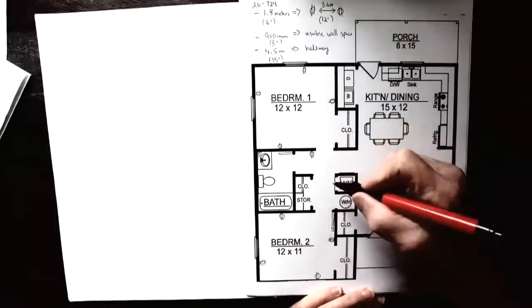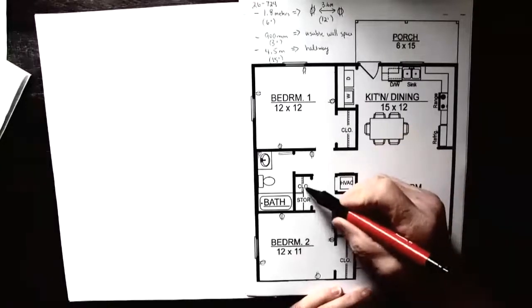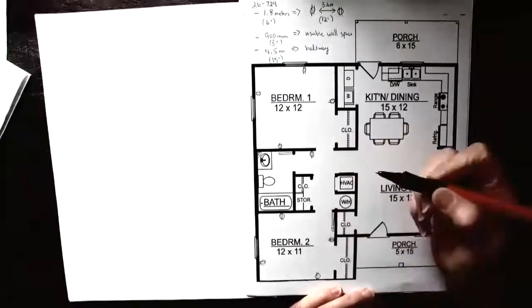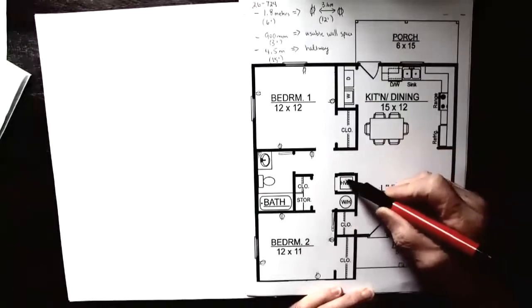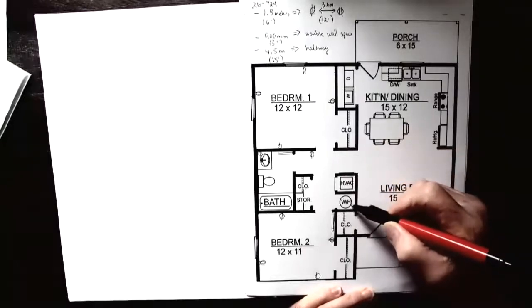That covers my bedrooms and hallway. There's no requirement - in fact, we don't want receptacles in the closet. This is kind of a utility room with your furnace and hot water tank. Those are going to be hardwired in.